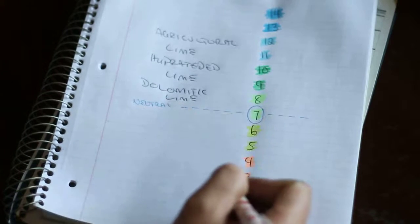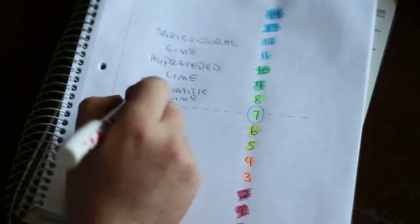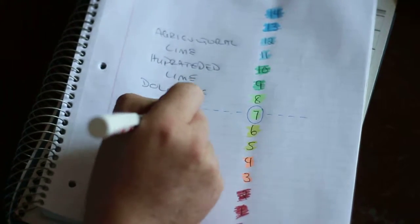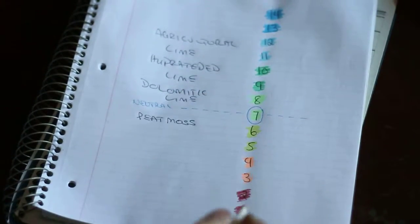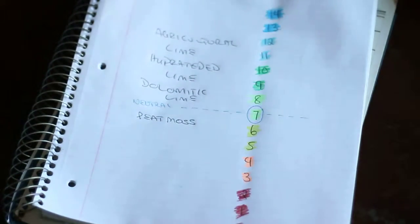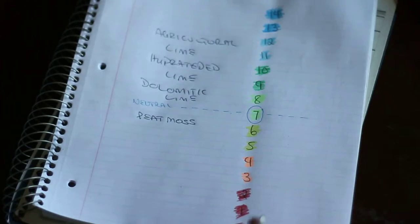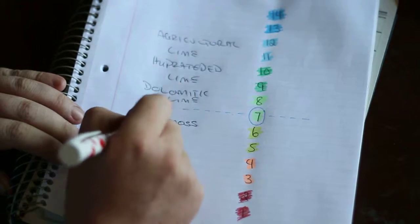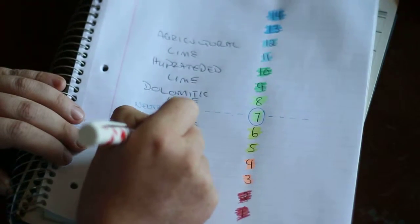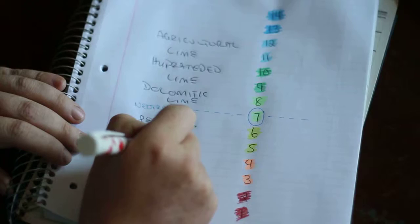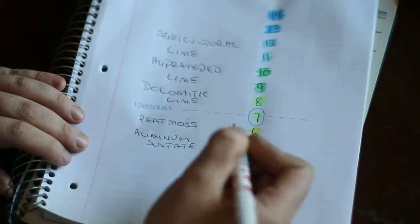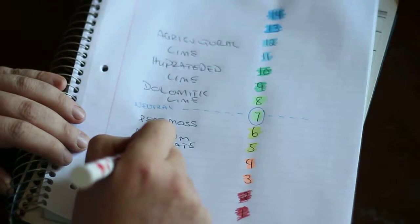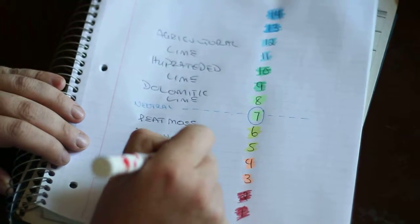Now when you're trying to lower the pH my preferred method is going to be peat moss. I like peat moss because it's great for drainage and it also helps lower the acidity just a little bit. You can also use aluminum sulfate and you can also use just organic compost.